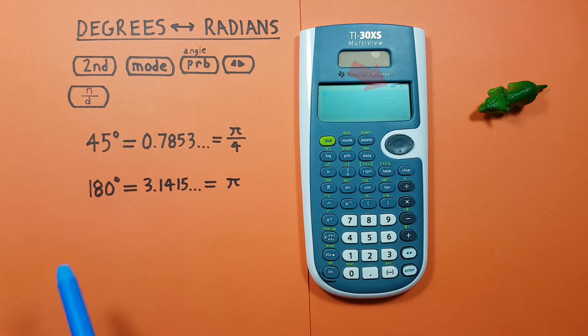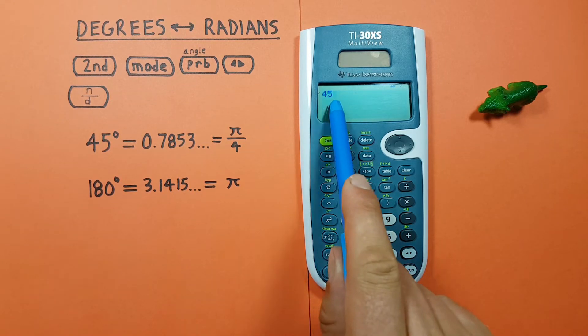Next, we enter our degrees, so we have 45 degrees. Next, we have to tell our calculator that this 45 is in degrees.